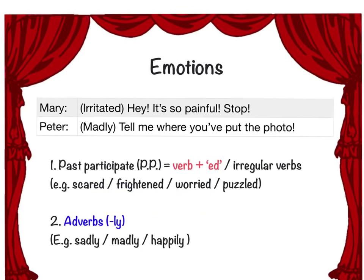The second important thing to pay attention to is emotions — you need to show actors how to feel and behave emotionally. Emotions should always be in brackets and placed before the speech. There are two ways to write them. Number one: use a past participle — a verb with -ed — as an adjective, for example: scared, frightened, worried, puzzled. Number two: use adverbs ending in -ly, such as sadly, madly, happily. Do not just put an adjective — it must be an adverb. All are placed before the dialogue.